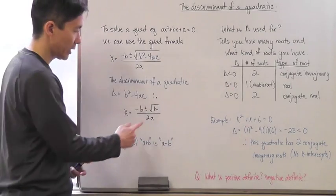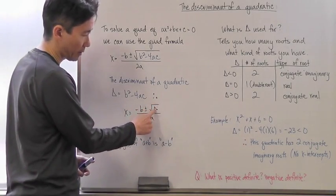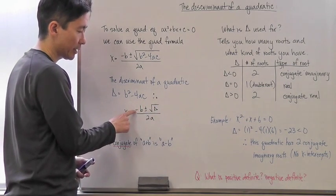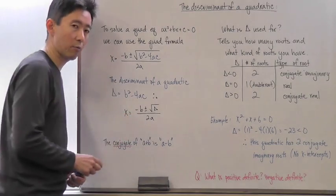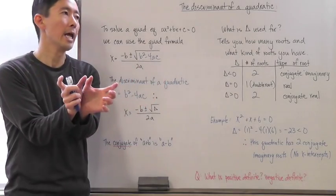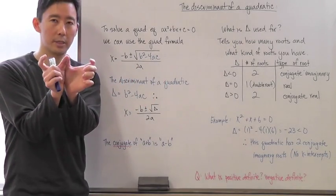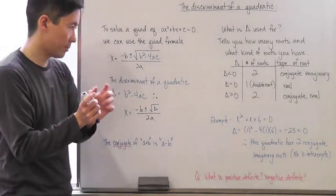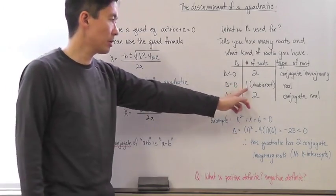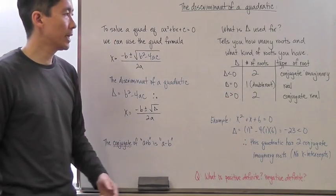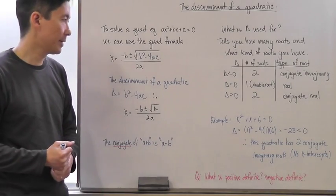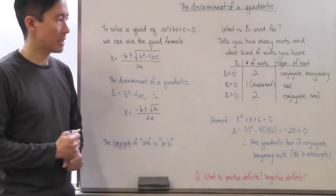If the discriminant equals zero, then this part of the quadratic formula is zero. The square root of zero is zero, so you really have just one root. That root is called a double root or repeated root, because when you factor the quadratic you get the same factors. The total number of roots is one, and it is a real root.